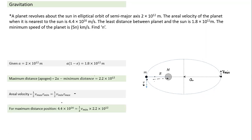For the maximum distance position, you substitute and get the answer. From the given information, you could have also easily calculated eccentricity and the semi-minor axis. The time period is proportional to the cube of the semi-major axis. We can calculate the time period as the area of the ellipse divided by the aerial velocity.